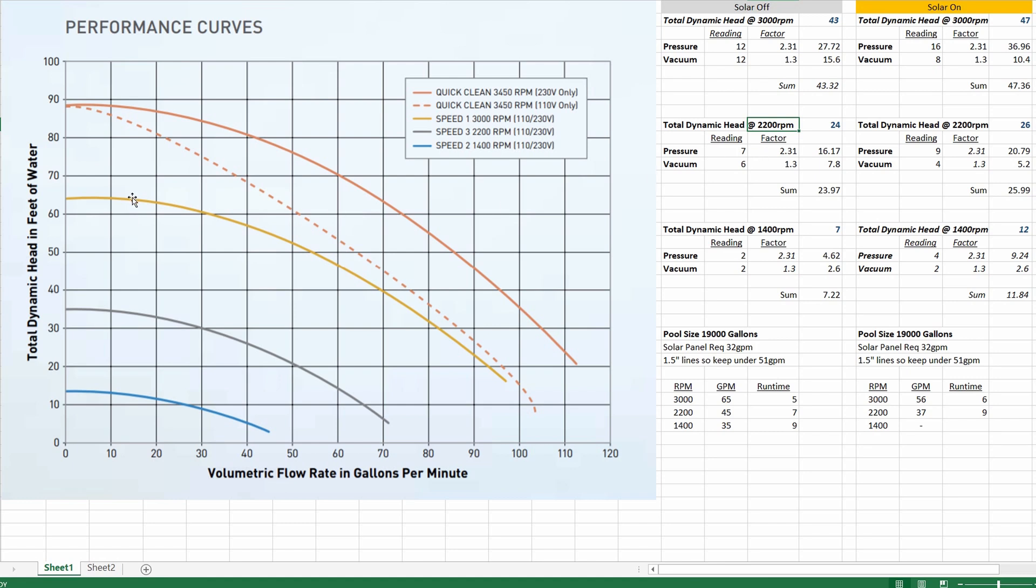And your total dynamic head is going to drop at a lower RPM so you need to use a different curve. So at 2200 RPM my pressure and vacuum readings were 7 and 6 respectively so again we use the same factor to multiply those values so now I have 16.17 and 7.8 and if you add those together we have just about 24 if you round up.